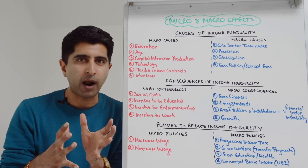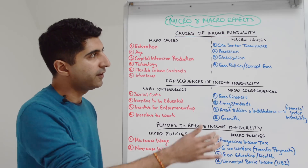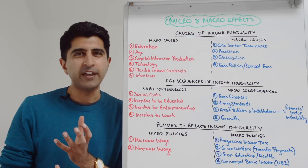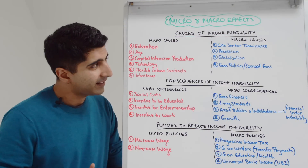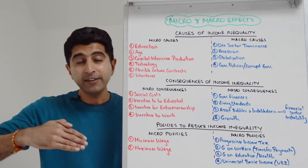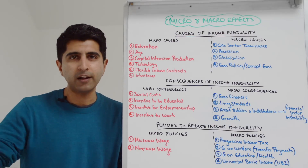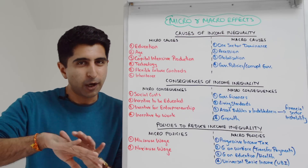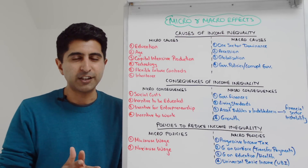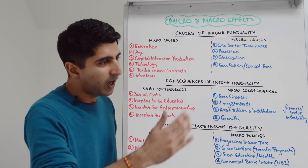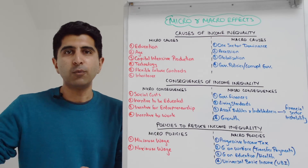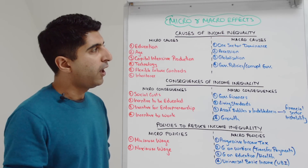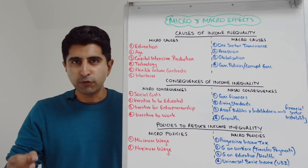Moving to macro causes, we're looking at economy-wide drivers of inequality. For example, when one sector is highly dominant for economic growth, and that sector is doing well, those who work in it will see higher incomes, but that doesn't transfer to other people in the population who don't see the same kind of income increase — a driver of inequality.